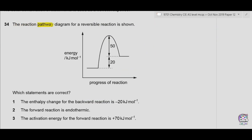Question 34: the reaction pathway diagram for a reversible reaction is shown. On the x-axis we have the progress of reaction and on the y-axis we have energy in kilojoules per mole. Statement one: the enthalpy change for the backward reaction is −20 kJ/mol. The products have more energy compared to the reactants, so the backward enthalpy change is negative and the energy difference is 20, giving −20 kJ/mol. Option one is correct.